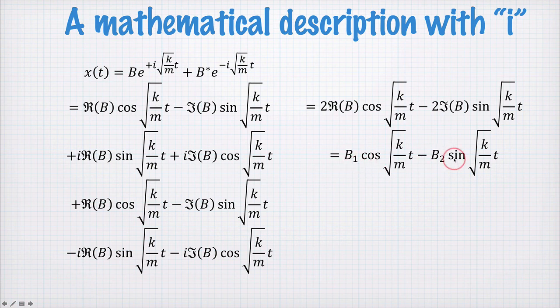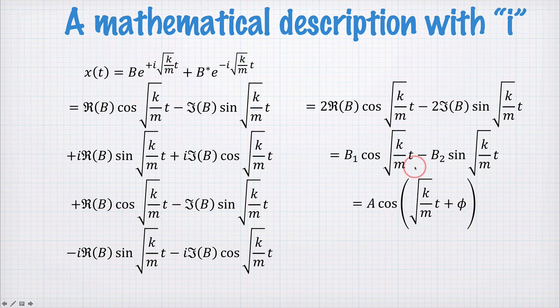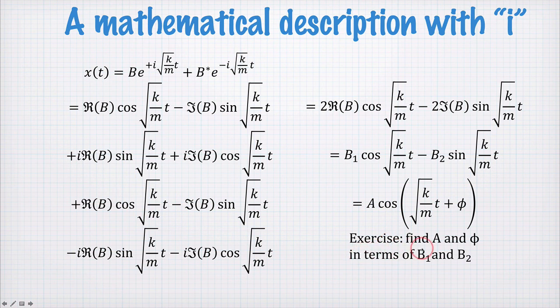And in fact, if you have any two sinusoids, like a sine and a cosine function, different amplitudes for the same frequency, you can write that as a single sinusoid with a new amplitude and a phase shift. And so I'll leave it as an exercise to find A and phi, this amplitude and this phase, in terms of B1 and B2, the difference of this cosine and the sine function.